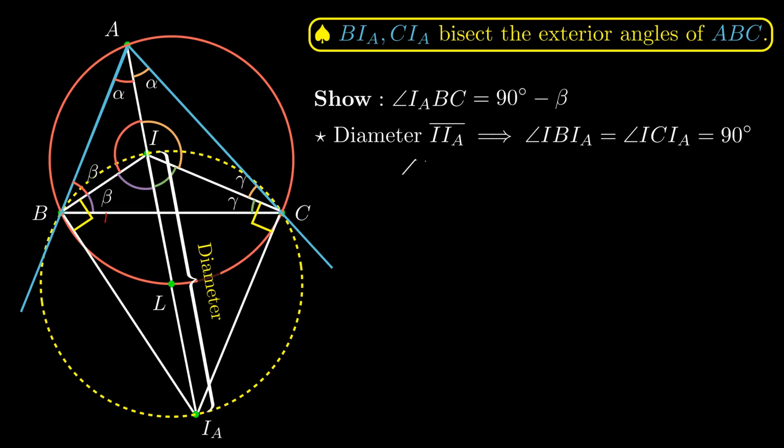So it can be found that angle I sub A, B, C equals angle I sub A, B, I minus angle I, B, C. And this equals 90° minus β, and that is what we want.